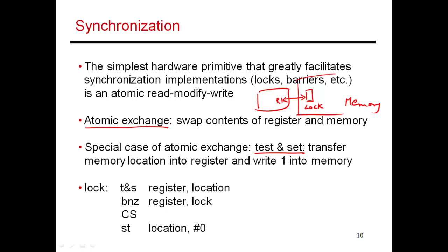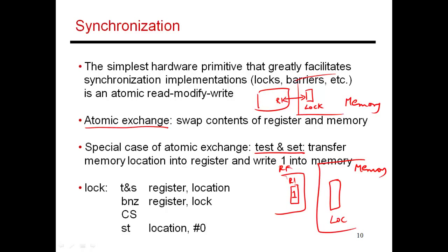Here I have my register file with a given register R1, and it initially has a 1 in it. In memory, I have my lock variable. If that lock variable carries a 1, it means that somebody else has the lock and somebody is busy working inside a critical section. If the lock variable has a 0, it means no one currently holds the lock and no one is executing the critical section, so somebody else can go ahead and acquire the lock. Let's assume that at the start the lock is unacquired — someone is free to enter the critical section.